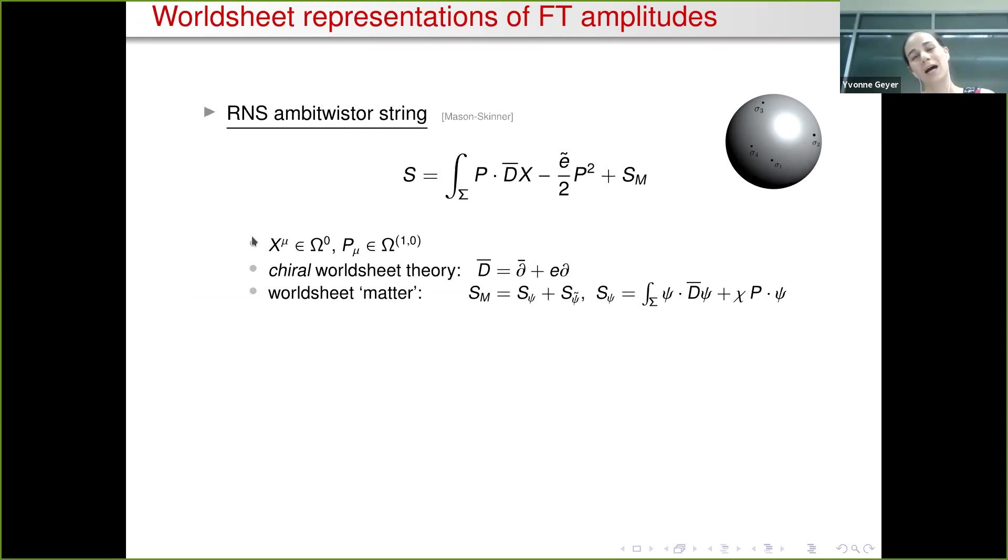The RNS ambitwister string by David and Lionel. What I want you to take away is that this is really a chiral worldsheet theory - everything is chiral including what I've hidden here in S_M, the worldsheet matter. I've kept this quite vague because this actually captures a big class of theories. For gravity type 2 supergravity, which I've spelled out here, we have two fermions which gives it the name RNS. Note that both of these are chiral, so there's no left and right moving - everything is left moving in this theory.